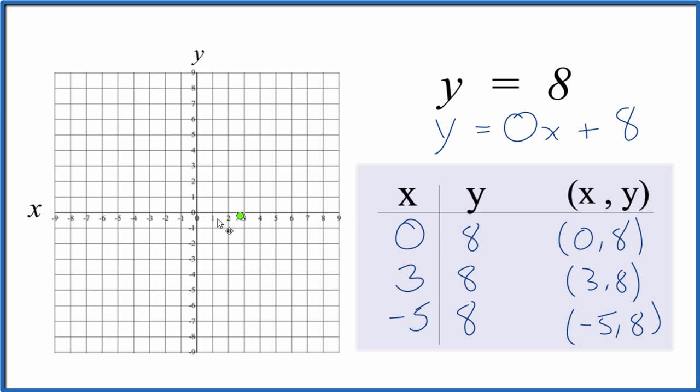So we start out with x is 0, and y is 8 right there. We have x is 3, and y is 8. x is negative 5 over here, and y is 8. So they're all in this horizontal line here.